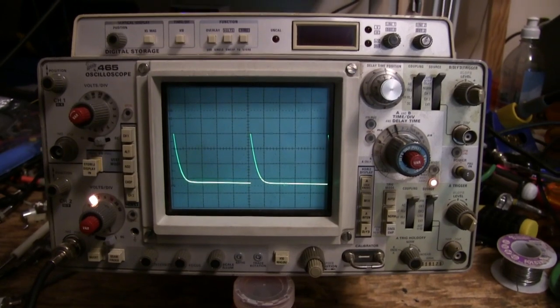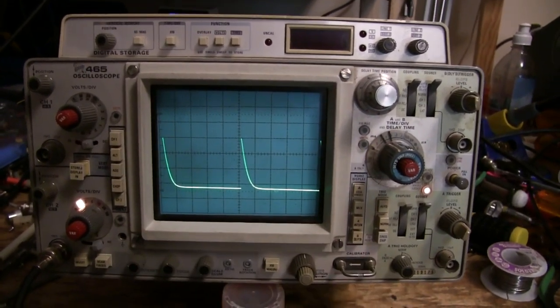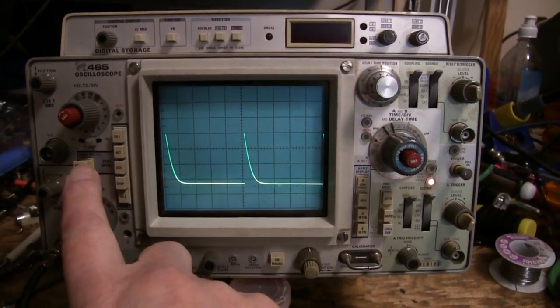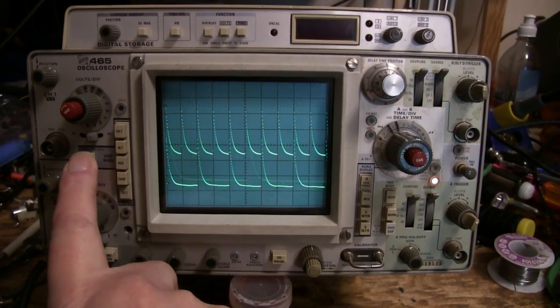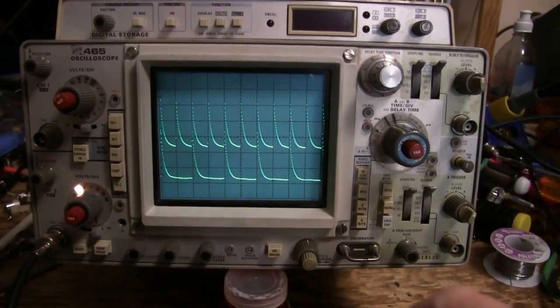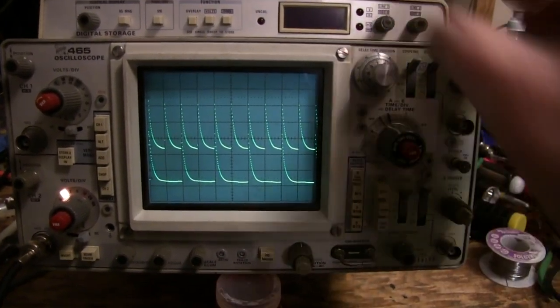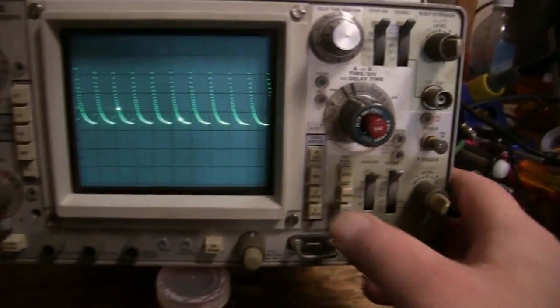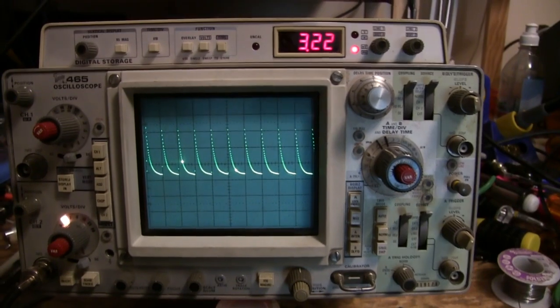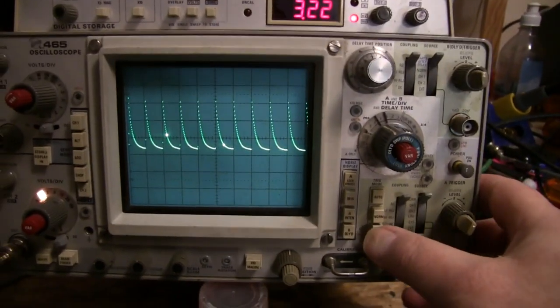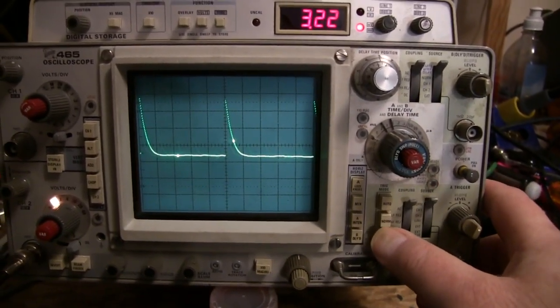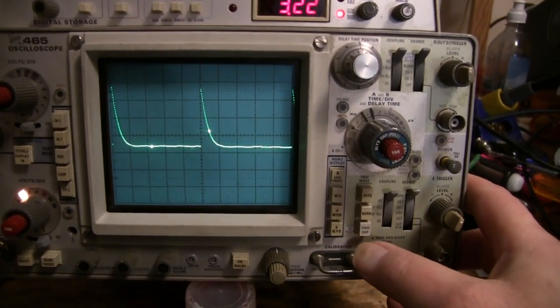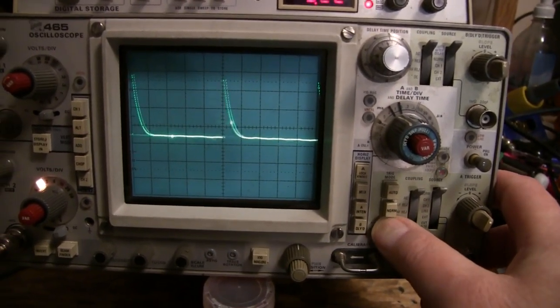Right now it's running in analog mode. To go to digital mode, I'm going to push in the digital storage button. And it doesn't acquire continuously like most digital scopes do. It only does a digital acquisition when you put in single-sweep mode and push the single-sweep button.